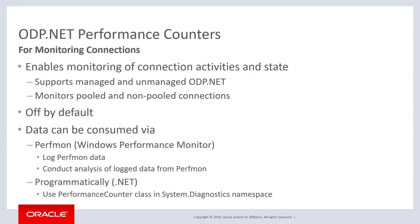Data from the Connection Pool Monitor can be consumed in a number of ways. One way is Perfmon, which lets you view your data from the Windows Performance Monitor console and do graphical analysis. Another way is programmatically, using that data from your counters with the PerformanceCounter class in the System.Diagnostics namespace in .NET.